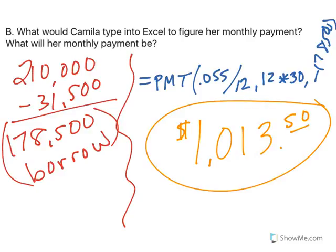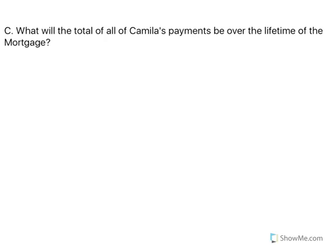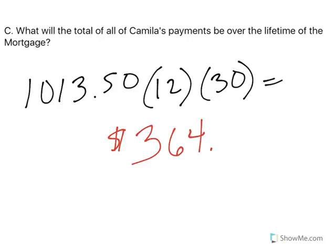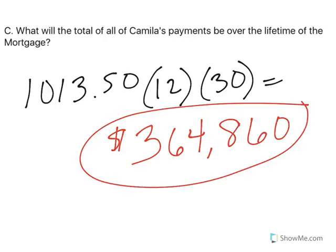That makes me want to cry — I can't imagine having a house payment like that. What will the total of all Camilla's payments be over the lifetime of the mortgage? If she's paying $1,013.50 per month, 12 months in a year, 30 years in the mortgage, that means she's going to pay $364,860 over the life of the loan.